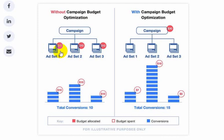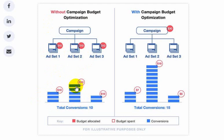You're spending ten dollars for each ad set — ten for the first, ten for the second, ten for the third. The results you're getting from these are: the first ad set got three sales, the middle one got five sales, and the third one got two sales. So in total you got ten conversions without Campaign Budget Optimization, because you set a fixed amount of money for each ad set.